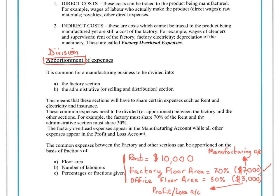There are a number of ways to divide an expense between the factory and other parts of the business. The most common is floor area, but you could also divide by number of workers — the more workers, the more rent allocated. Alternatively, the question may simply state that, say, 70% is paid by the factory and 30% by the office, without specifying the basis. Just go with what the question says and apportion the expense between the profit and loss account and the manufacturing account.